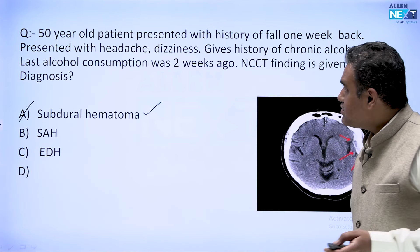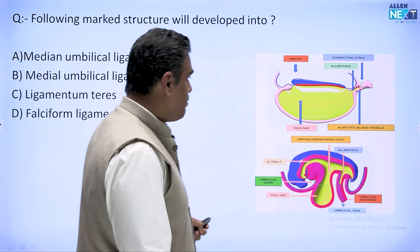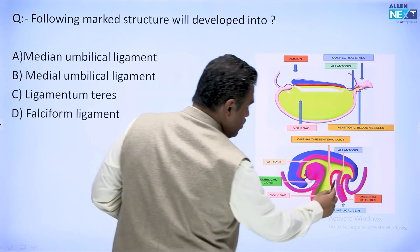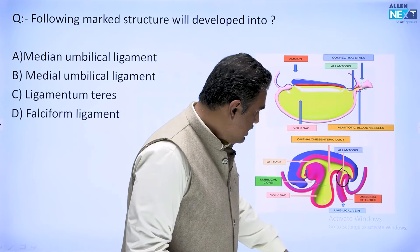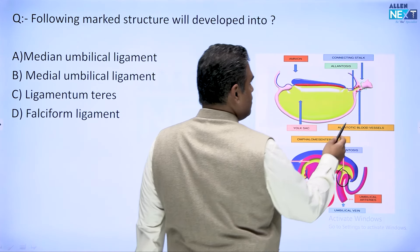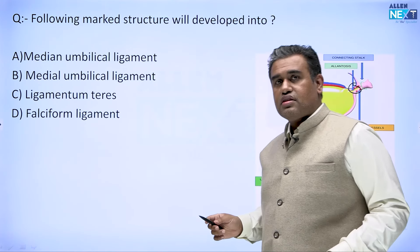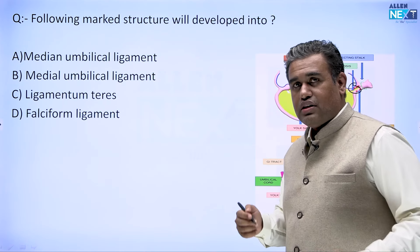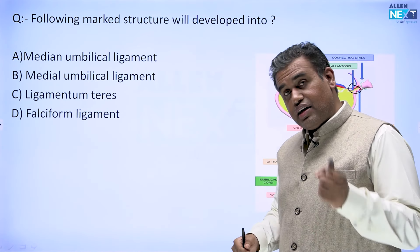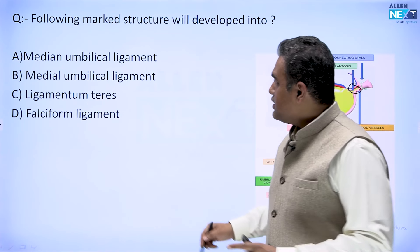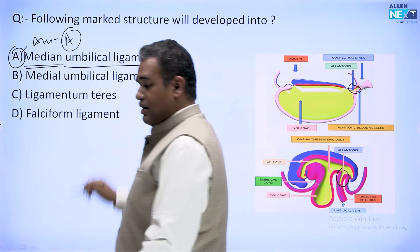Next question: which marked structure will develop into what? The marked structure is a projection coming from the lower part of the hindgut — that is the allantois. After birth, the allantois connects from the apex of the bladder going out through the umbilicus; it becomes the urachus, and the urachus becomes an umbilical ligament — a single, median structure. Therefore the answer is the median umbilical ligament.